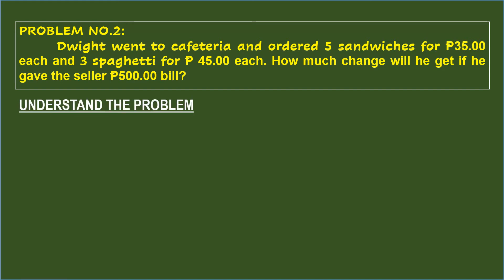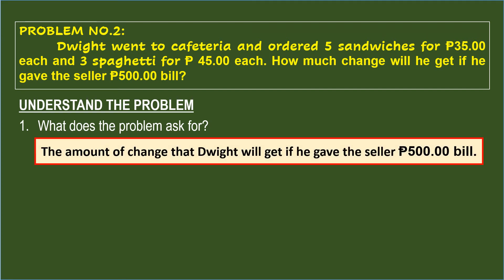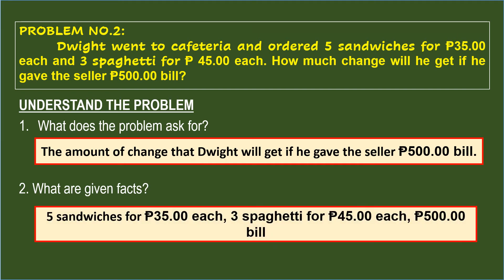Let's understand the problem. What does the problem ask for? Since the question is: How much change will he get if he gave the seller a 500 peso bill? — the problem asks for the amount of change that Dwight will get. The given facts are: 5 sandwiches for 35 pesos each, 3 spaghetti for 45 pesos each, and a 500 peso bill.